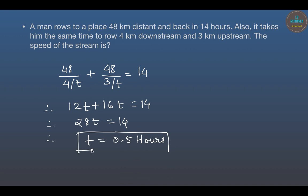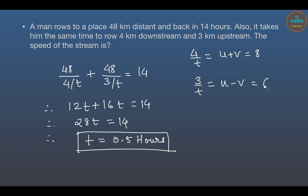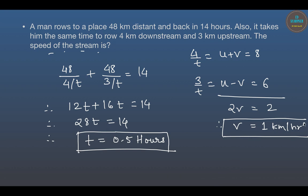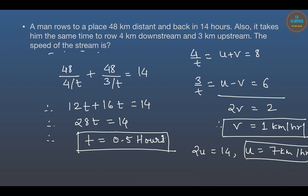Now we can find U plus V and U minus V. So 4 divided by T gives U plus V equals 8, and 3 divided by T gives U minus V equals 6. Subtracting the second from the first gives 2V equals 2, therefore V equals 1 kilometer per hour — the speed of the stream. Adding the two equations gives 2U equals 14 and U equals 7 kilometers per hour. This is how different problems can be designed around the same concept.